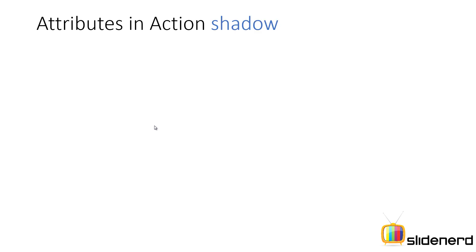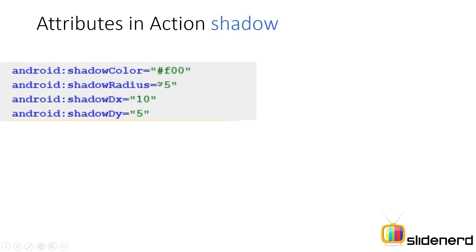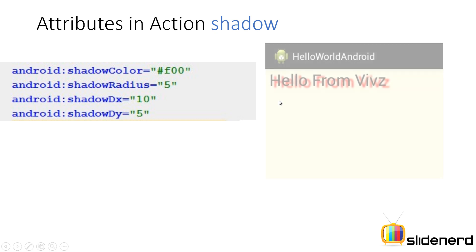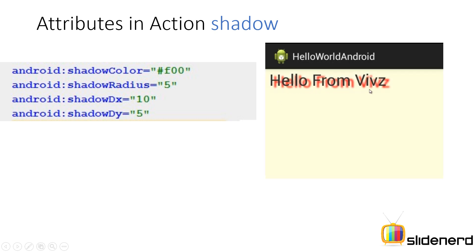Last but not least, we have the shadow. You can set four attributes: shadow color — I have given red here — shadow radius of 5, dx of 10, and dy of 5. As you can see, there is the text 'Hello from Views' and there is a shadow which is red in color, just as I specified. The shadow radius of 5 — if you increase this radius, the shadow starts getting more and more blurry. You can experiment with this in Android Studio or whatever Android development tool you are using. ShadowDx is the distance of the shadow from the original text in pixels. ShadowDy is the vertical distance along the y-axis from the start of the original text to the start of the shadow — that is what shadowDy controls.